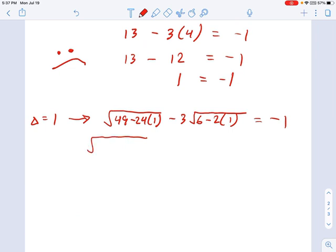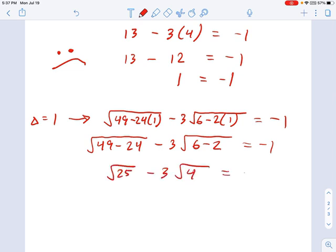So now we just work through this and it's going to be 49 minus 24 minus 3 times 6 minus 2 equals negative 1. And that's going to be the square root of 25 minus 3 times the square root of 4 equals negative 1. Which is 5 minus 3 times 2 equals negative 1.